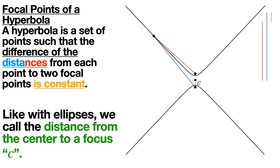Now how big is that constant part? There's a very nice result that if we take the constant part — look at the orange line — and we move it, it's going to be exactly the distance between the two vertices of the hyperbola, not the foci, the vertices.